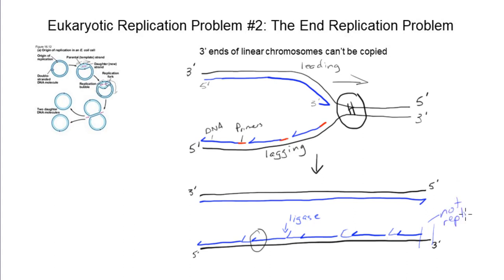With every round of DNA replication, the very 3' ends of linear chromosomes cannot be copied, and so the newly produced daughter DNA molecule is going to have some missing sequence — it could be hundreds to thousands of nucleotides long, depending on how these fragments get laid down. DNA is the genetic instruction manual, the blueprint for life. These genetic sequences encode protein products that the cell requires to do all the work of a cell. If with every round of replication our DNA is getting shorter and shorter, eventually the cell is going to start losing genetic sequence and genes that it needs to function. So how do eukaryotes deal with this problem?